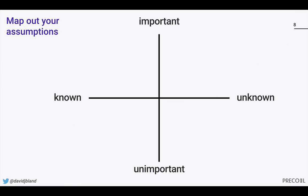So next we're going to map out these assumptions. It's great as a first step to get them out of your heads and onto stickies, but it's kind of a mess right now and it's hard to make sense of it — this is a great way to build a common understanding as a team. You'll notice we have a two-by-two here: important and unimportant on one axis, and known and unknown on the other. These aren't binary, but it's important to understand the spectrum of where your assumptions fall.